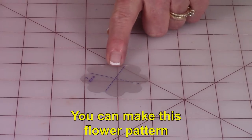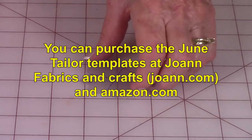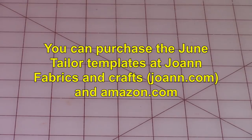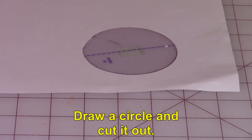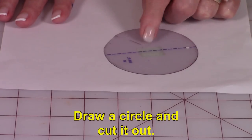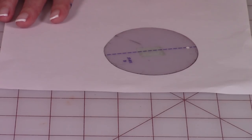What I'm going to do is show you how to make this kind of template. This is a June Taylor template, but this is real easy to make yourself if you don't want to buy the templates or you're having a hard time finding them. You can probably get them on Amazon and also at Joann Fabrics and Crafts.